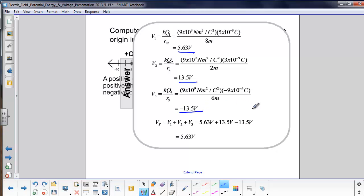And then we just algebraically sum them up, 5.63 plus 13.5 minus 13.5, and we have a voltage at the origin due to the three charges at 5.63 volts.